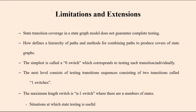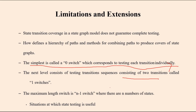To clarify: the zero switch tests each transition individually. The one switch consists of a sequence of two transitions. The maximum switch length is n minus one, where n is the number of states. For example, with seven states the maximum switch length is seven minus one, which equals six.